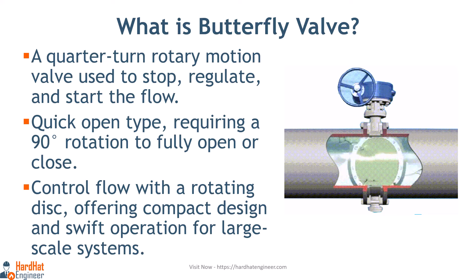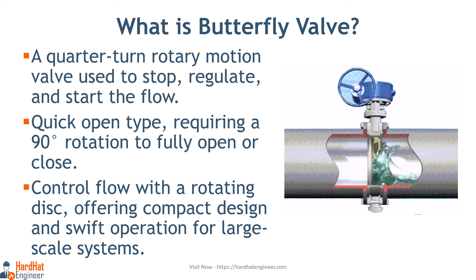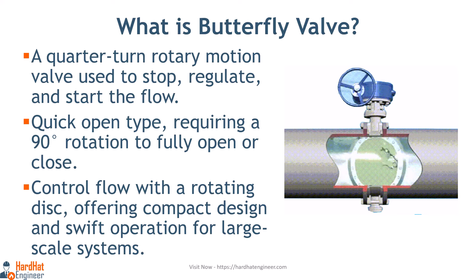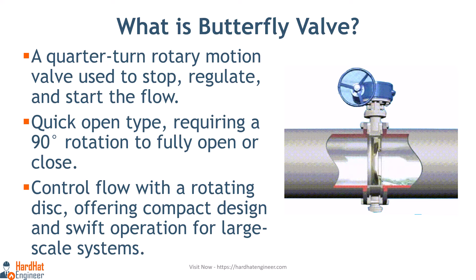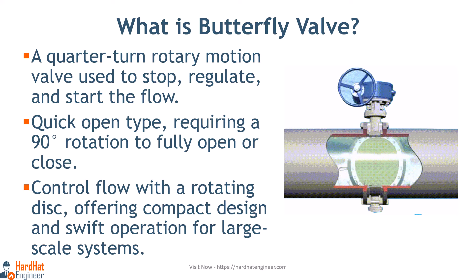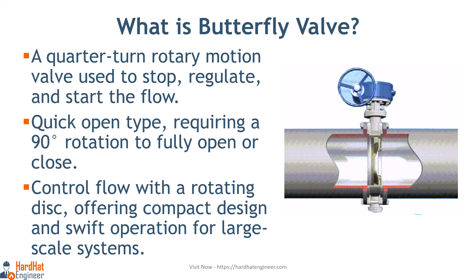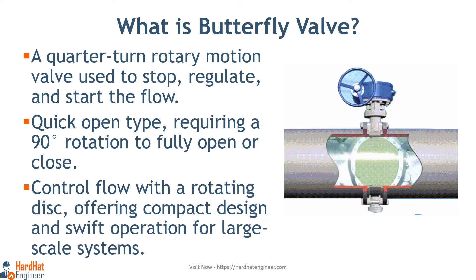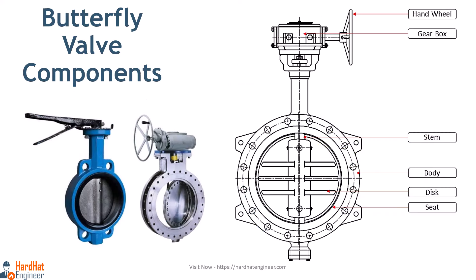What is a butterfly valve? Butterfly valves control flow with a rotating disc, offering compact design and swift operation for large-scale systems in industries. It is a quarter-turn rotary motion valve used to stop, regulate, and start the flow. Butterfly valves are a quick-open type — a 90-degree rotation of the handle can completely close or open the valve. Normally they are used in systems where a positive shutoff is not required.